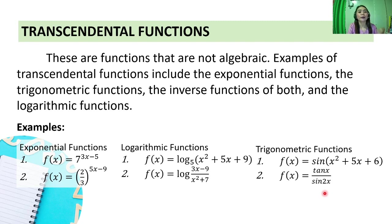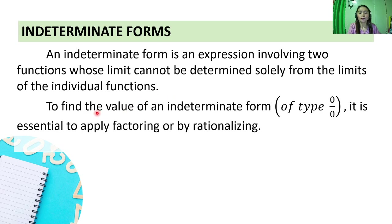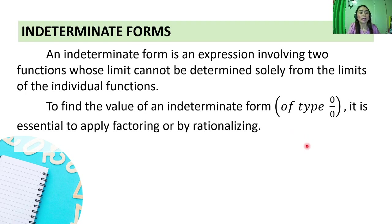Let's discuss what indeterminate forms are. An indeterminate form is an expression involving two functions whose limit cannot be determined solely from the limits of the individual functions. To find the value of an indeterminate form of type 0 over 0, it is essential to apply factoring or by rationalizing. For this presentation, ang ididiscuss natin ay yung 0/0 type — kapag sinabsitute natin yung constant, ito yung lalabas, 0 over 0. Aarali natin how to calculate the limit kung ganun yung case.